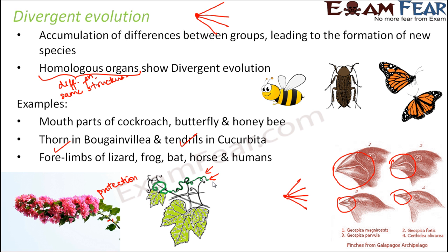So just remember this simple thing — do not get confused with convergent and divergent evolution. Convergent means different unrelated organisms have adapted such that they arrive at a common point where they have something doing the same function for all of them. When you talk about divergent, different parts that started from the same origin over a period of time are now performing different functions. That is divergent evolution.